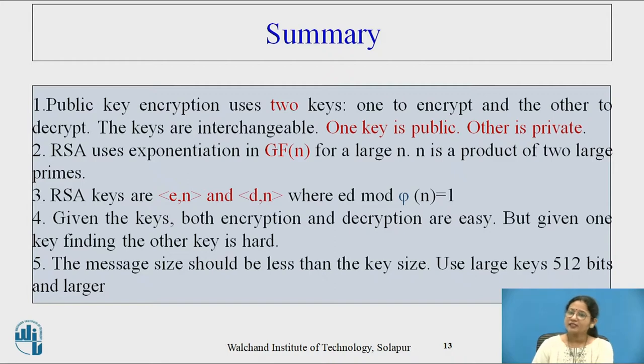RSA uses exponentiation in GF of n for large n. n is a product of two large primes. Public key encryption algorithm has lots of support from mathematical formulas and theorems. RSA keys are e,n and d,n where ed mod phi of n equals 1. How e and d are interrelated is also important.